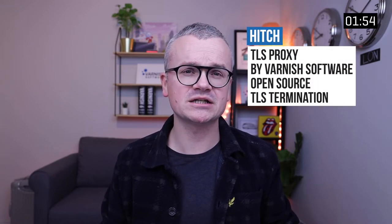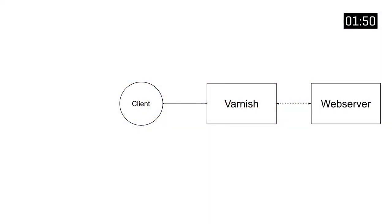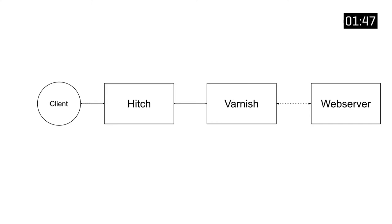Hitch is a TLS proxy developed by us, by Varnish Software. It's completely open source and terminates the TLS session, which is especially useful if you're using Varnish Cache — the open source version of Varnish that doesn't support TLS. So by adding Hitch in front of Varnish you provide an endpoint for HTTPS requests.